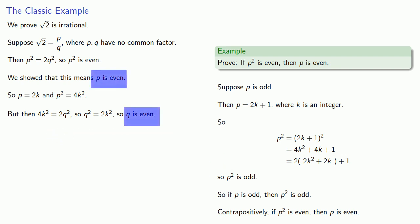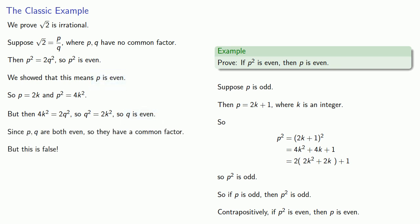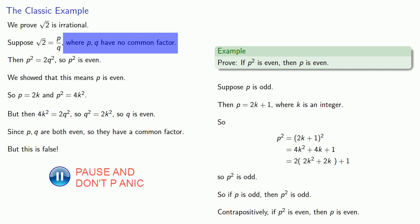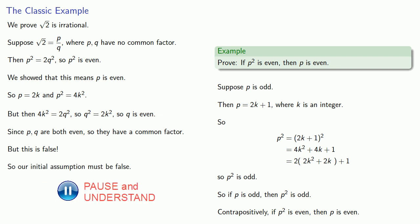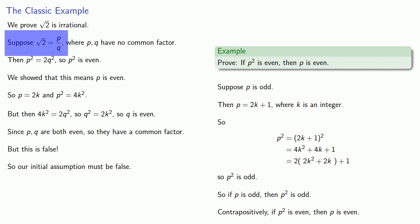Since p and q are both even, they have a common factor. But we know this is false — we said they did not have a common factor. That means we got on the wrong bus; our initial assumption must be false. Since our initial assumption was that the square root of 2 equals p divided by q, this must be false. And so the square root of 2 is not equal to p divided by q — it must be irrational.